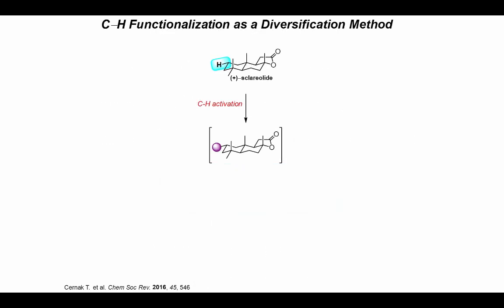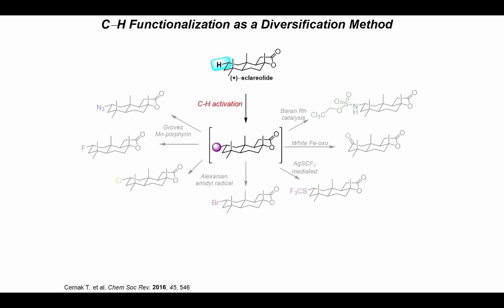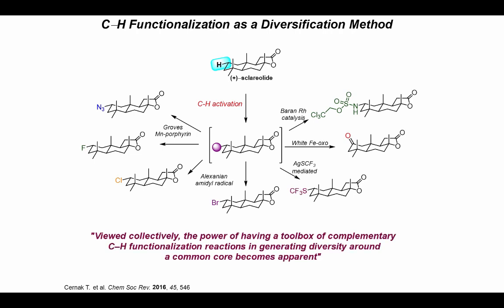So why do we still care about CH functionalization? In general, it's a way to take a late-stage intermediate and install some new functionality. Lots of methods are known, with sclerolide being a commonly used model late-stage substrate. In these methods, the C2 hydrogen is abstracted, giving some intermediate — whether it be an alcohol, metal, or a free radical — which could then be trapped by a number of different methods to give a CH functionalization product. As Cernak commented in a review, having a toolbox of complementary CH functionalization reactions generates diversity around a common core, especially for late-stage functionalization and finding lead drug molecules.